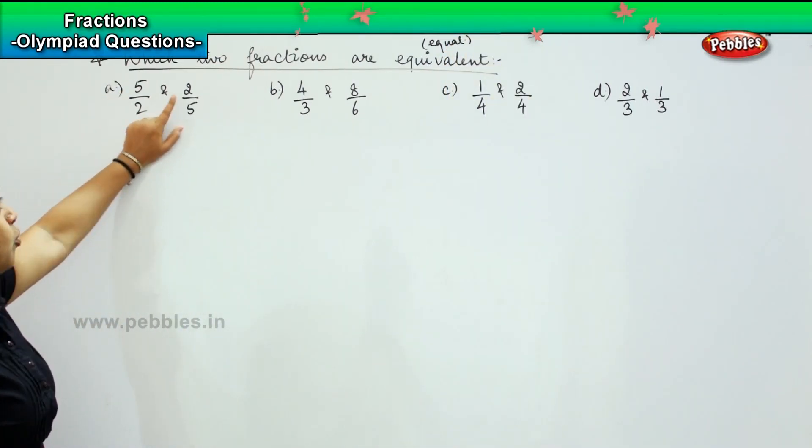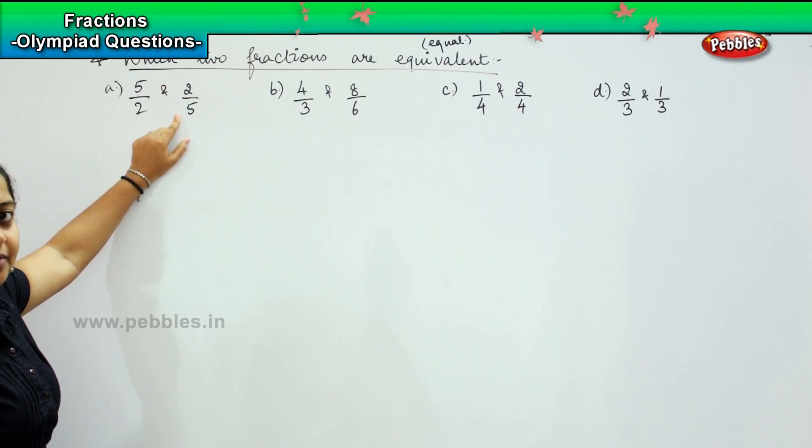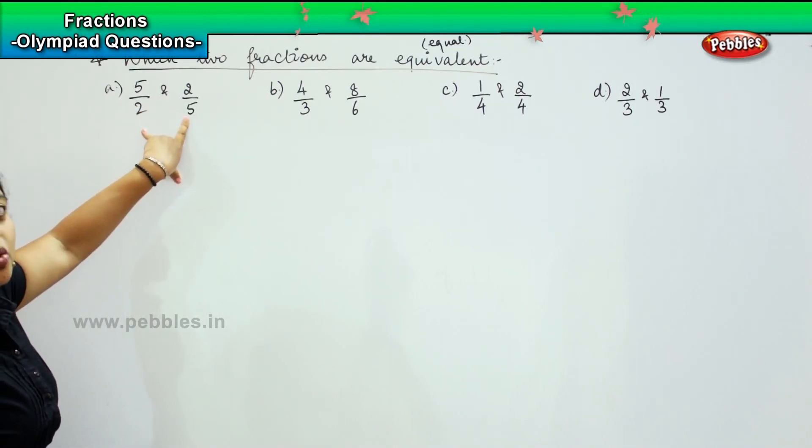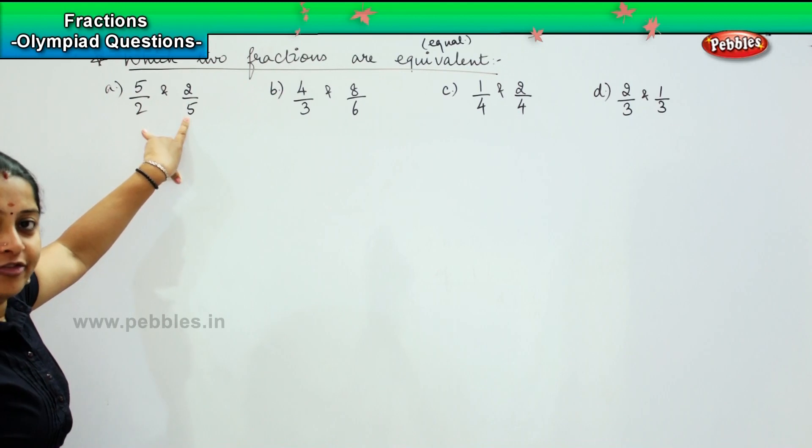5/2 and 2/5, are they equivalent? No, because first, the denominators are different. Second, this is an improper fraction and this is a proper fraction. So there is no equivalency in the first pair.